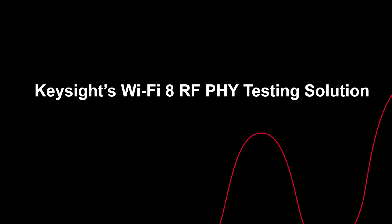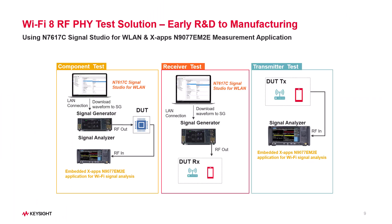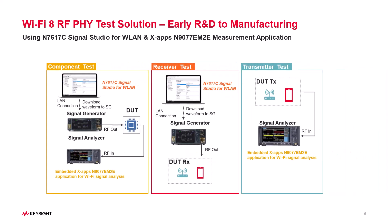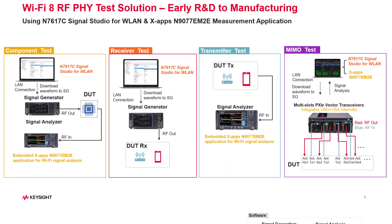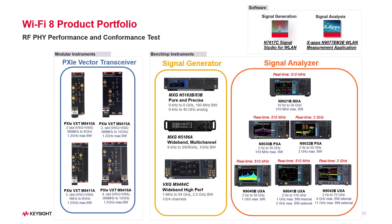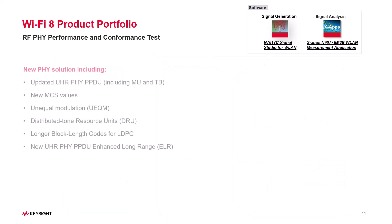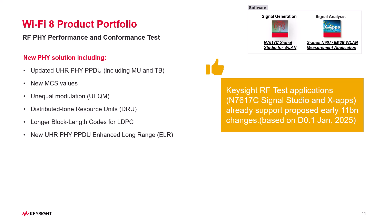Now let's talk about testing Wi-Fi 8. With Keysight Signal Studio N7617C and XApps, you can accelerate development from R&D to manufacturing. These tools help test components, receivers, transmitters, and even MIMO setups, whether you are using benchtop or modular instruments. Keysight's toolkits already support the IEEE 802.11BN Draft 2.1 version, so Wi-Fi 8 RF testing is ready to go.